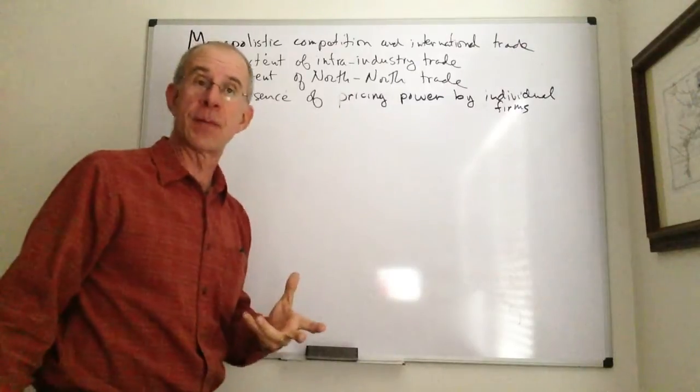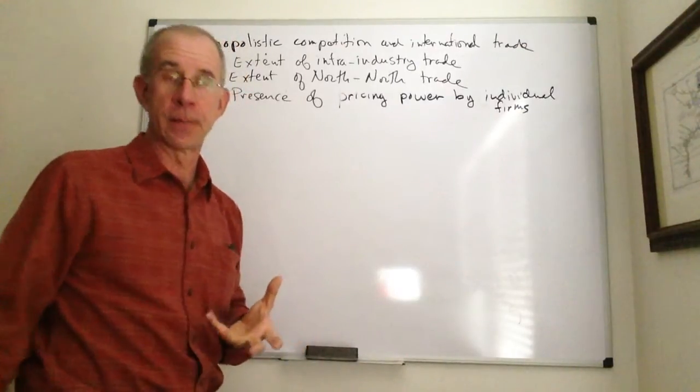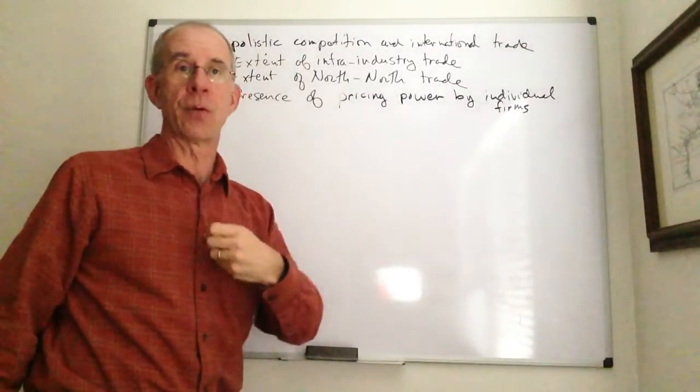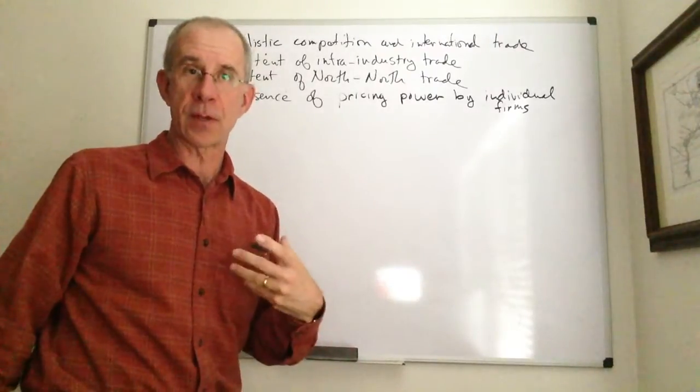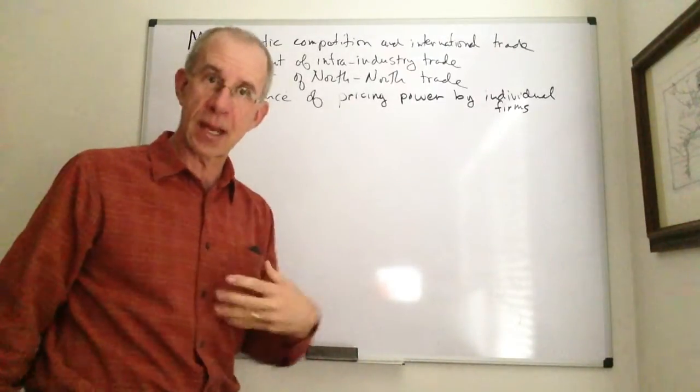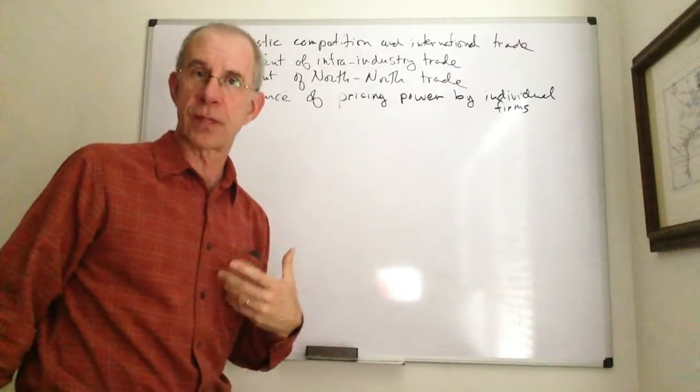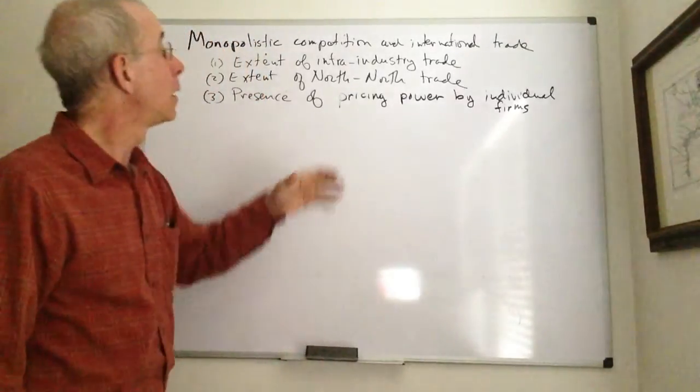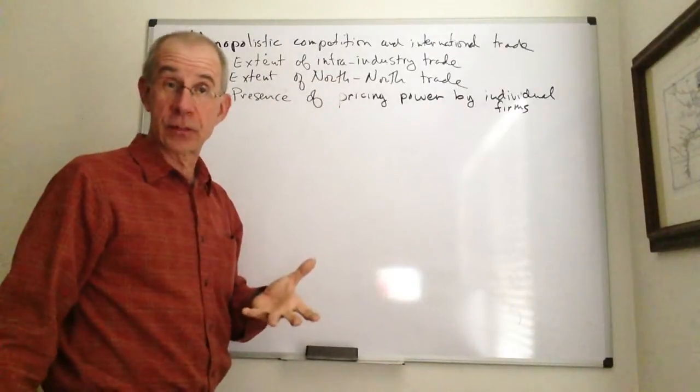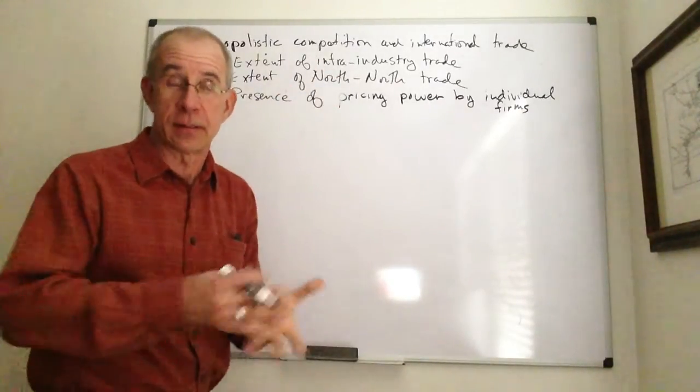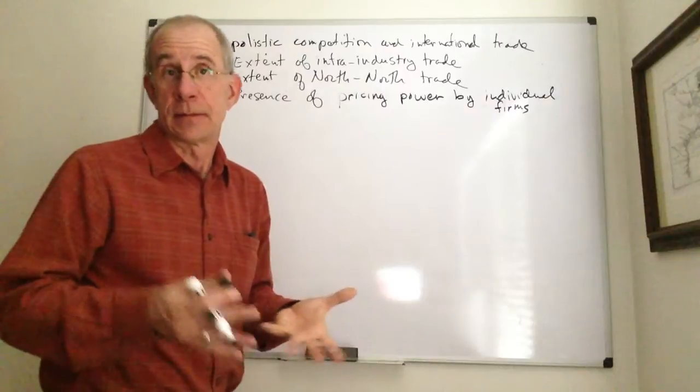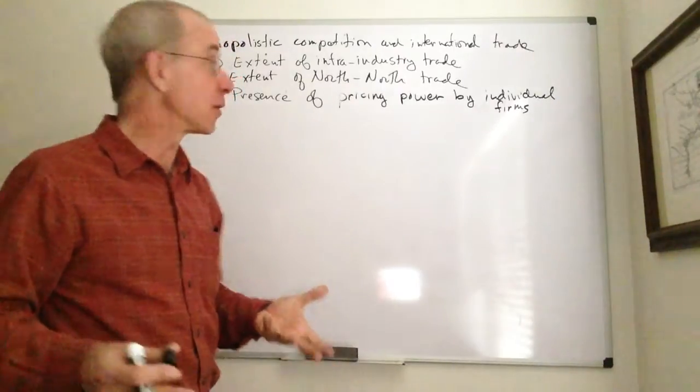One, that there's a significant amount of intra-industry trade. The United States both imports and exports chemicals. The United States both imports and exports automobiles. It both imports and exports electronic goods. And so this fact of intra-industry trade is not one that really is explainable by the standard models.